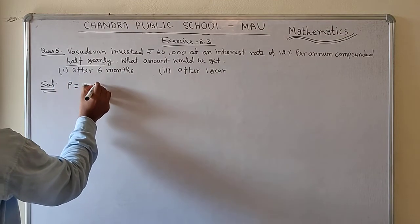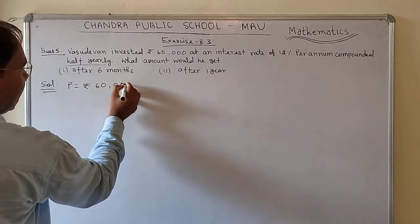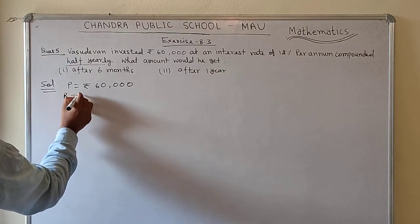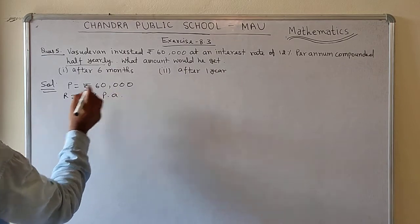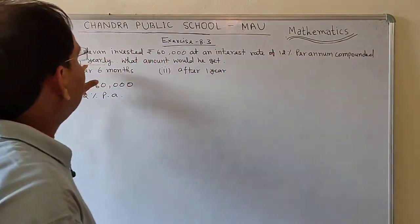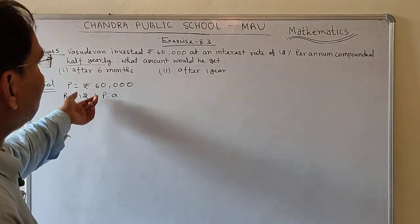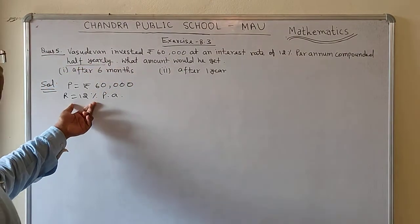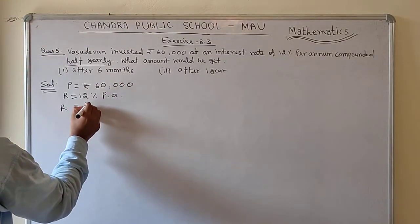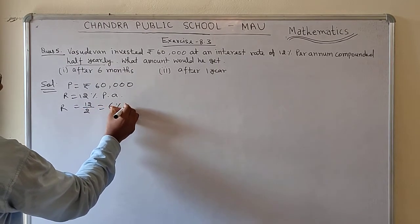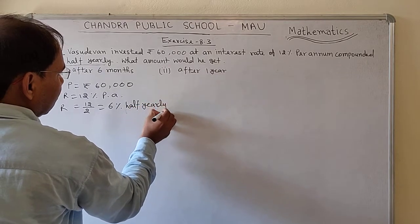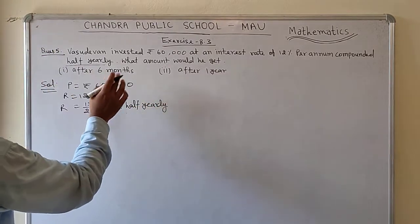Principal amount P = ₹60,000 as given in the question. Rate R = 12% per annum, and it is compounded half-yearly. So the half-yearly rate will be R = 12 ÷ 2 = 6% per half-year.